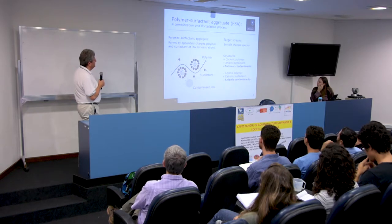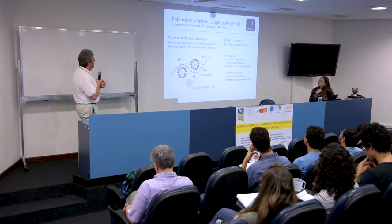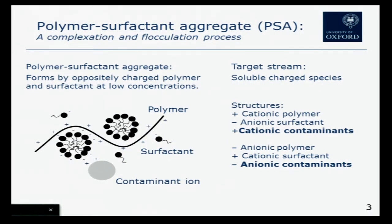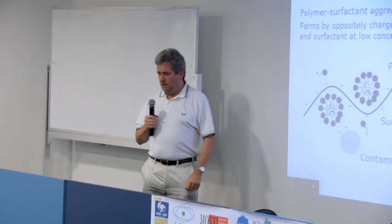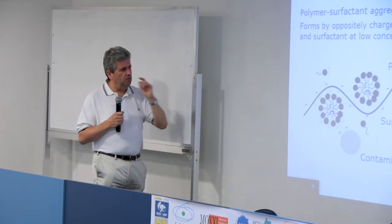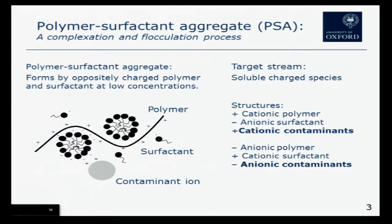Polymer surfactant aggregates work as a kind of complexation and flocculation process. We form entities known as polymer surfactant aggregates — also called pearl strings in the literature, like necklaces where pearls are attached along a long chain. What's happening is I have a long polymer chain with a charge, and little aggregates made from surfactants are attracted to the chain at different places, giving you this necklace-like structure.